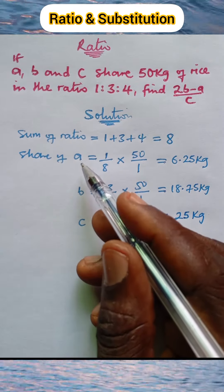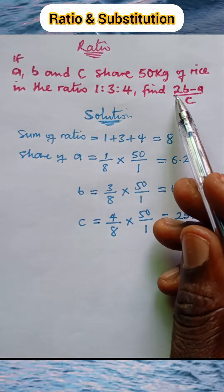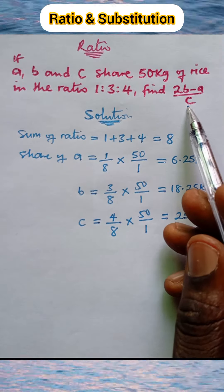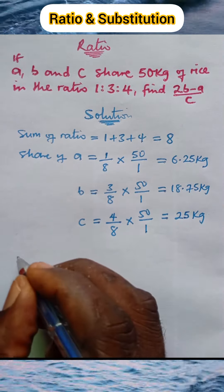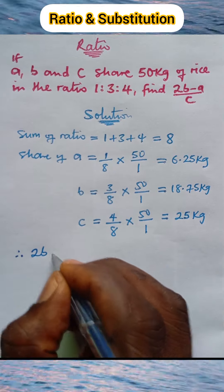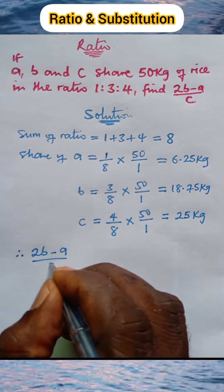and c respectively. But the question says we should find (2b - a)/c. Therefore, we calculate (2b - a)/c.